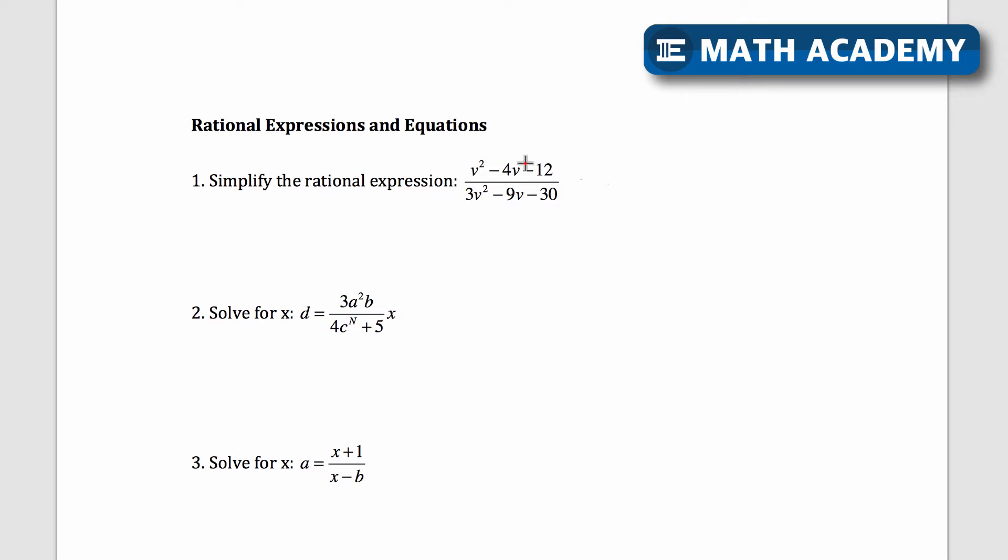What I'm going to do is factor the top and bottom and then cancel out the common factors. So the top is going to become, let's see, what would multiply to negative 12 and add up to negative 4?